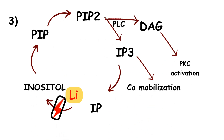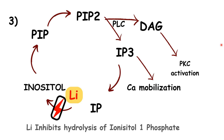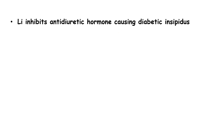Third hypothesis: in the brain, lithium affects inositol-1-phosphate. This leads to a chain of reactions involving IP3 and DAG via G-protein coupled receptors. IP3/DAG signaling leads to calcium mobilization as the cellular response. Lithium inhibits hydrolysis of inositol-1-phosphate, and also inhibits antidiuretic hormone.